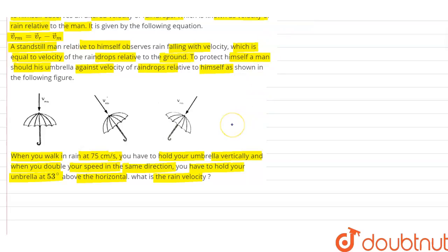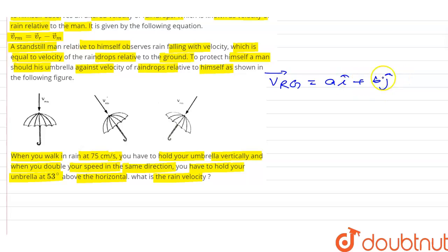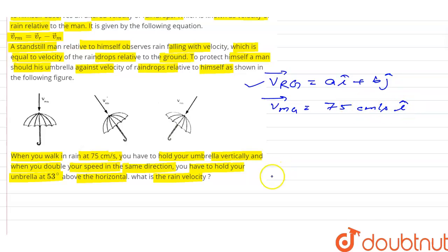First, we know the velocity of rain with respect to ground is equal to a·i-cap plus b·j-cap. The velocity of man with respect to ground is equal to 75 centimeters per second in the x-direction, so this becomes 75·i-cap. The rain is falling in a certain direction and the man is standing here.